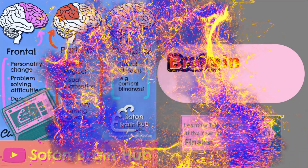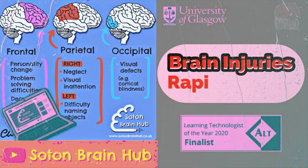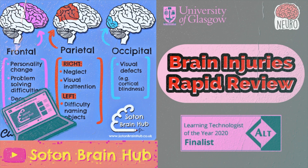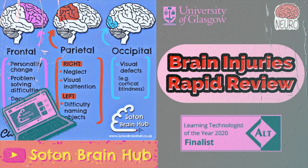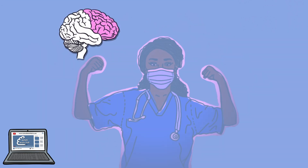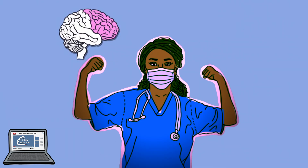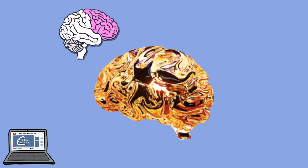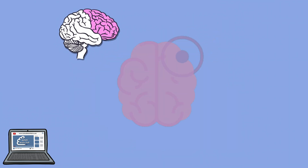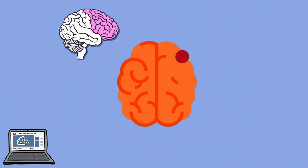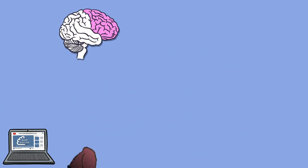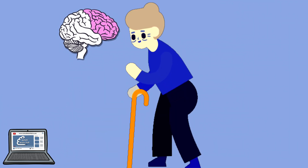Hi there and welcome back to SOT and Brain Hub. My name is Calvin and today we'll be rapidly reviewing brain injuries. In this video we'll progress through the various anatomical regions of the brain and outline some of the key clinical findings that may be observed when they sustain damage. This damage is most commonly caused in all regions by a variety of conditions such as stroke, head trauma including traumatic brain injury and various neurodegenerative processes such as dementia.